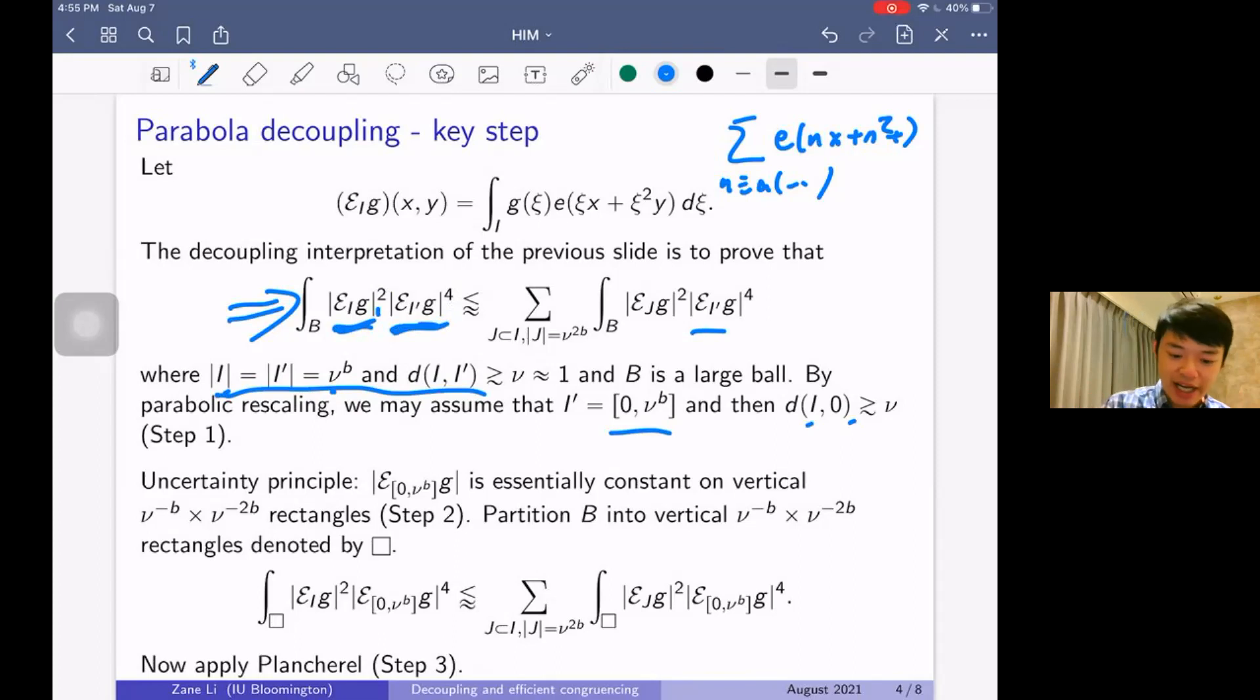Now what was the next step? The next step said that these four variables dictate what sort of scale I want to study my other two variables at. So the uncertainty principle says that the extension operator over (0, ν^b) is essentially constant on vertical ν^{-b} by ν^{-2b} rectangles. The uncertainty principle basically says on rectangles of this dimension, this expression doesn't oscillate so much; we can pretend that it's a constant. So then what do we do? To prove this estimate, we just partition.